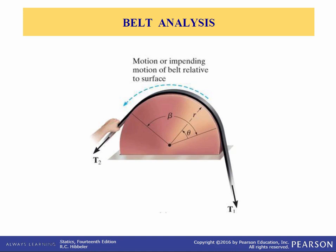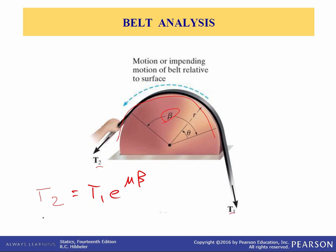Now let's take a look at belts. Consider this flat belt passing over a fixed curved surface with the total angle of contact equal to beta radians. If the belt slips, or is just about to slip, then T2 must be greater than T1 and the motion-resistant frictional forces. There's a detailed analysis in the book — it's rather complicated — but the analysis shows that the tension force T2 is equal to T1 times e raised to mu times beta. Make sure that you use beta in radians in this equation.